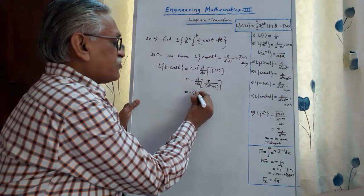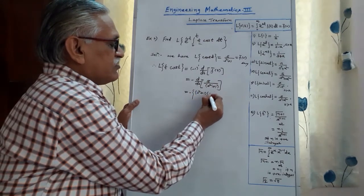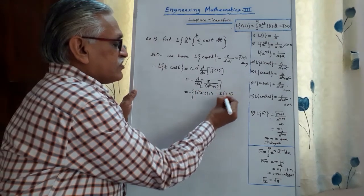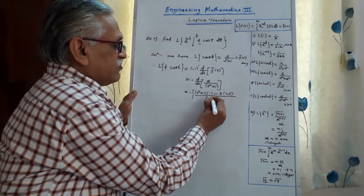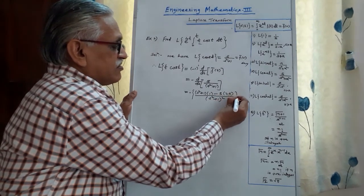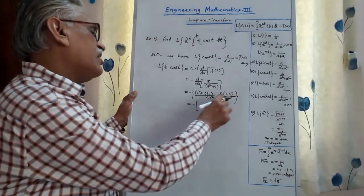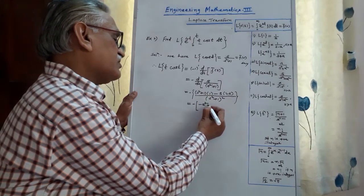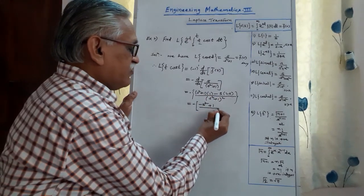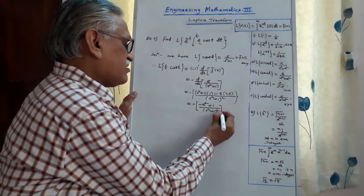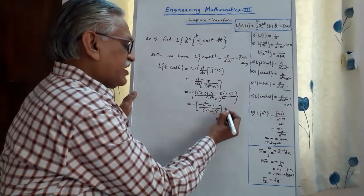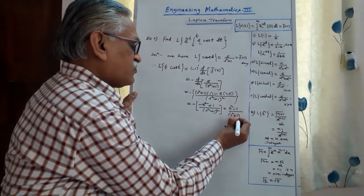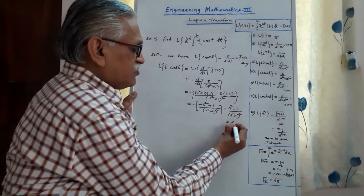f̄(s) = s/(s² + 1) is in the form u/v, so we apply the quotient rule. The denominator is (s² + 1), the derivative of the numerator s is 1, minus s times the derivative of (s² + 1) which is 2s, all divided by (s² + 1)². Simplifying: (s² + 1 − 2s²)/(s² + 1)² = (1 − s²)/(s² + 1)², giving (s² − 1)/(s² + 1)². We call this the new f̄(s).